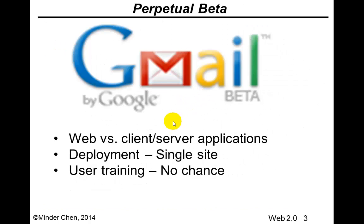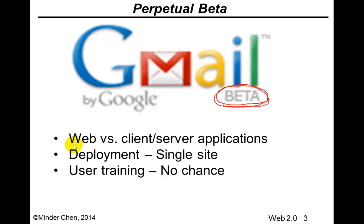Let's look at Gmail as an example. For quite a while, although a lot of people have been using Gmail, Google still referred to Gmail as a beta version. Perpetual beta means Google is constantly updating Gmail. You don't hear about Gmail 2.0 or Gmail 3.0 — it's just Gmail, which goes through many iterations in terms of updates.